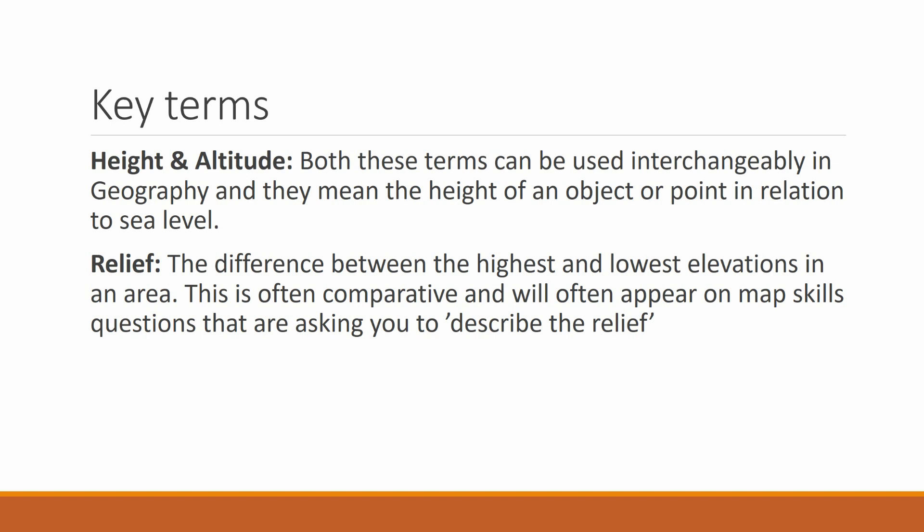First, let us get started with the key terms. There are a few key terms you need to know about. Height and altitude. Both of these terms are normally used interchangeably, and they mean the same thing. They mean the height of an object or a point in relation to sea level, so the height of a mountain, for example.